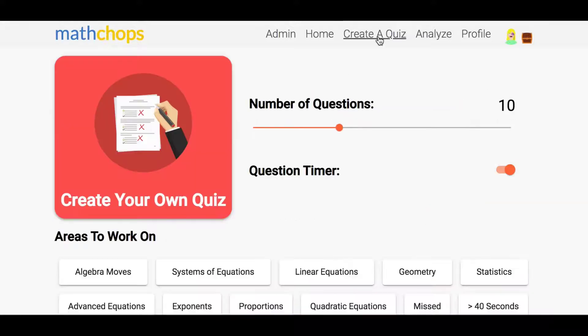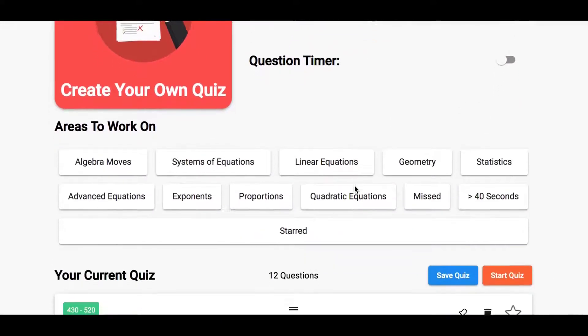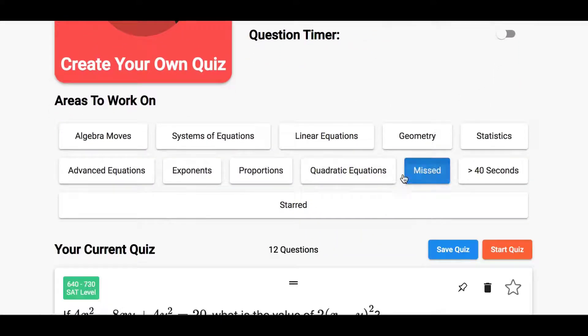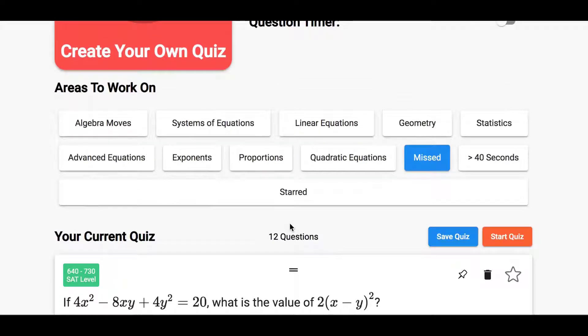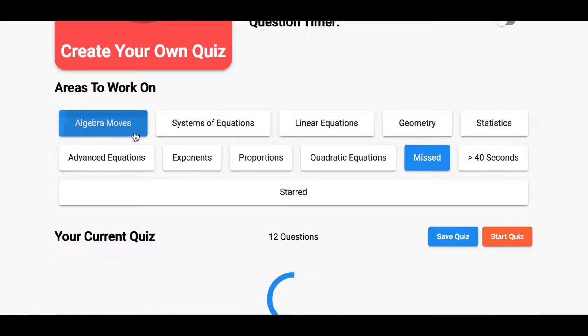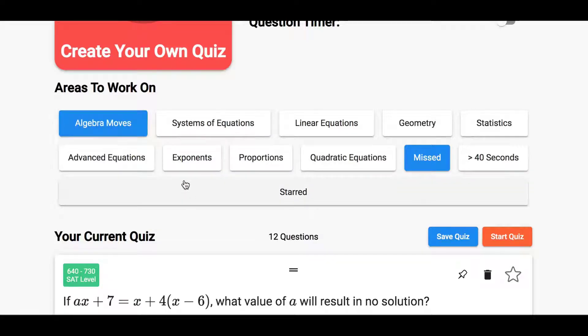And so during the session, you can create a quiz together. You can adjust the number of questions with this. You can turn off the timer if you want. And sometimes you can just focus on missed questions. But if you want, you can also focus on specific categories like missed algebra moves, for example.